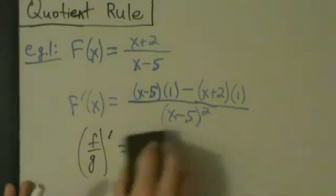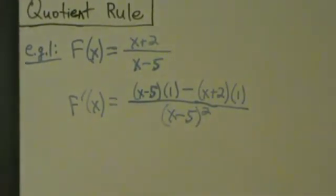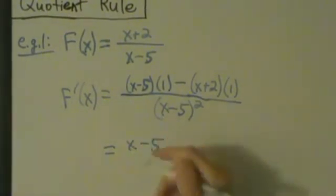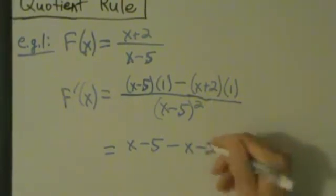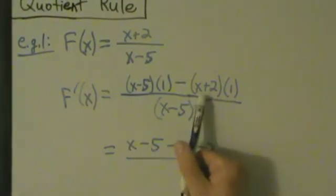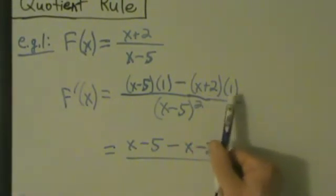Anyway, let's go ahead and simplify that now. So when we simplify, what happens? x minus 5 minus x minus 2. Be careful when distributing this minus sign. Multiplying by 1 doesn't really do anything at all.